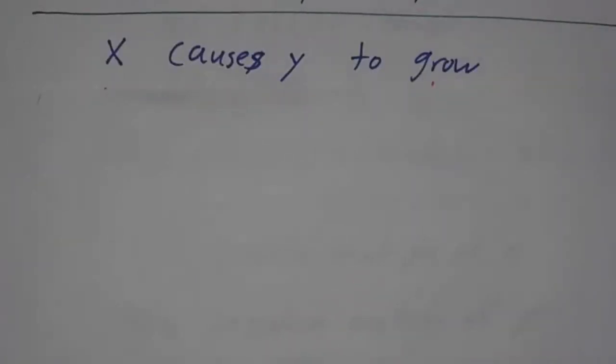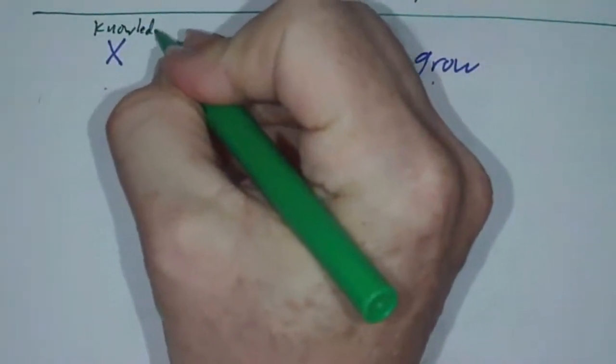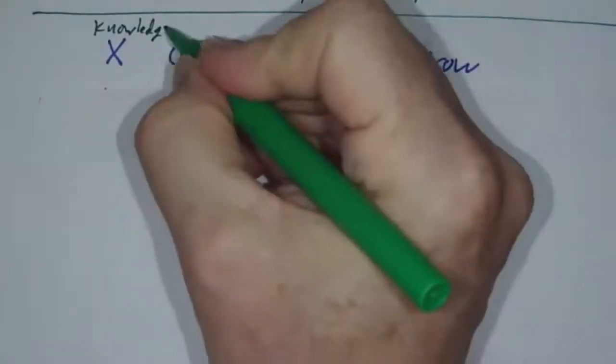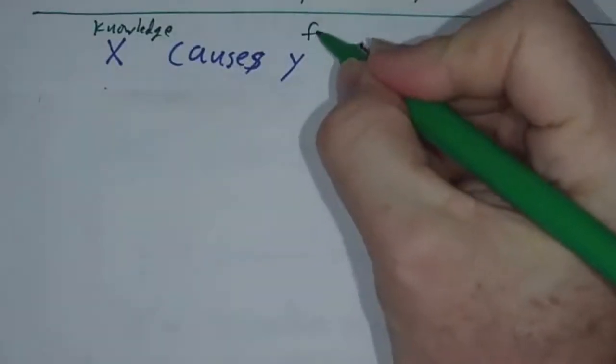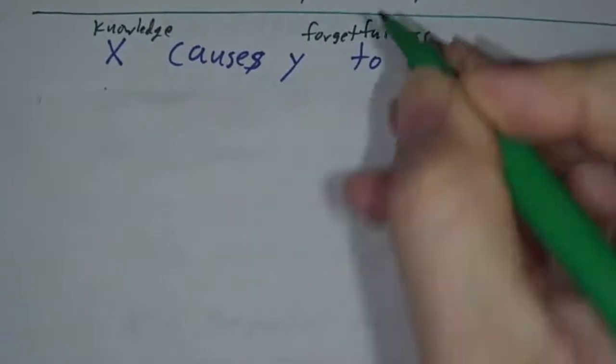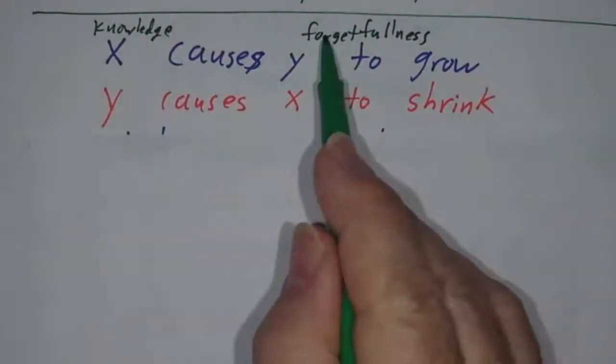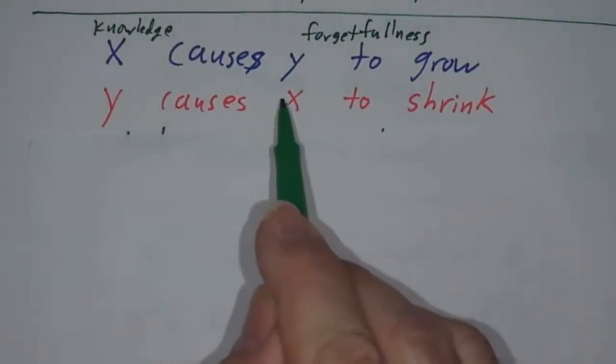You have one thing, like let's say knowledge, that causes something else to grow, like forgetfulness. But that second thing causes the first thing to shrink. The more you know, the more you forget. The more you forget, the less you know.